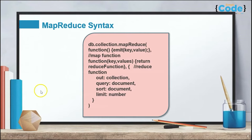Let us understand the syntax of MapReduce. The syntax is: db.collection.mapReduce(), and within the parentheses, mention the keyword function with the emit keyword, specifying the key and value you want to perform aggregation on. Then we have the reduce function, where you mention the key and values and the return keyword with the aggregation operation — it can be average, sum, or maximum. Inside that we have certain keywords like out, query, sort, and limit.